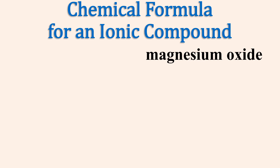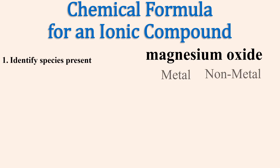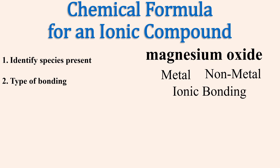Let's write the chemical formula for the compound magnesium oxide. First, let's identify the species present. Magnesium is a metal and oxide is the nonmetal. We can now identify the type of bonding. Bonding between metals and nonmetals is called ionic bonding.